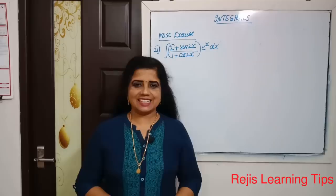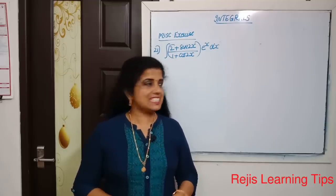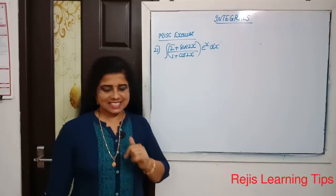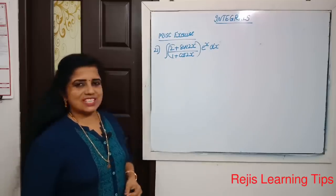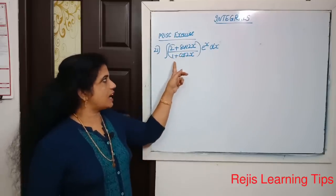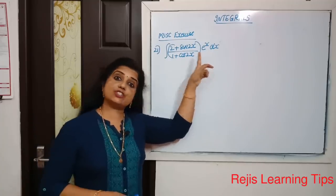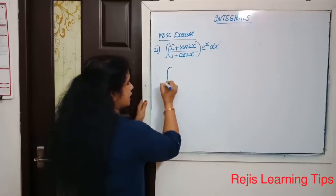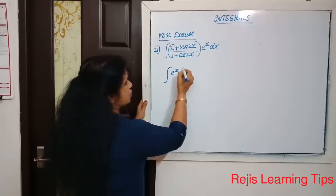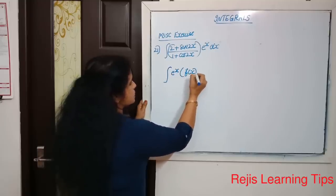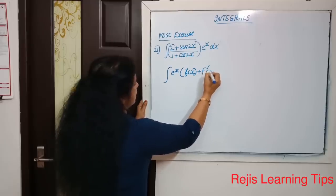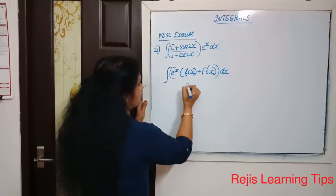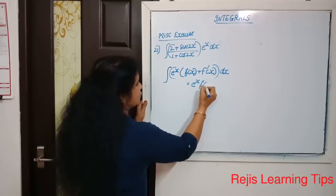Hi everyone, welcome back. Today we are going to discuss the 21st question from the miscellaneous exercise of integrals. The question is: integral of (2 + sin2x) divided by (1 + cos2x) times e raised to x dx. We are going to use the formula: integral of e raised to x into [f(x) + f'(x)] dx equals e raised to x · f(x) + c.